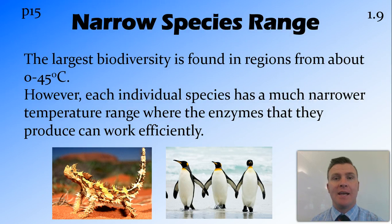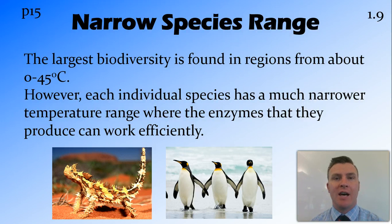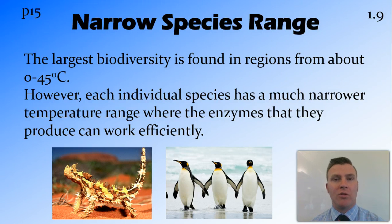Animals that live in the desert, such as the thorny devil, are adapted so that their enzymes work in that higher temperature range. If you were to take that thorny devil and put it into a more moderate climate, it would not be able to survive. Conversely, things that live in cold temperature ranges, like penguins, have enzymes and mechanisms to deal with that extreme cold environment. However, if you were to put them in a temperate environment, they wouldn't be able to survive there either, because the enzymes would be outside of their optimal range.